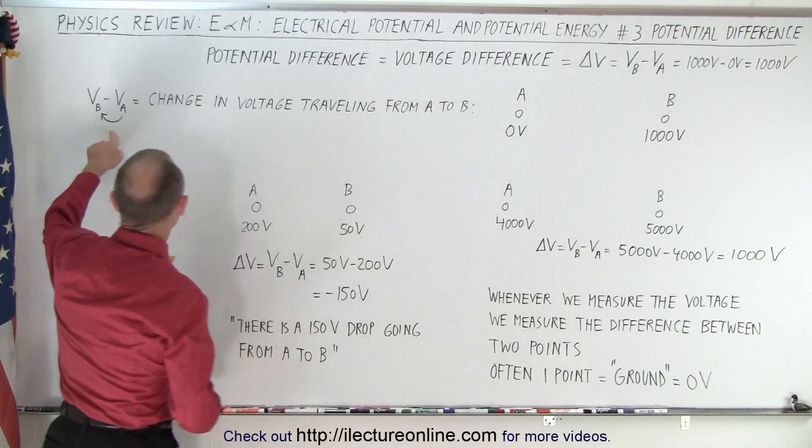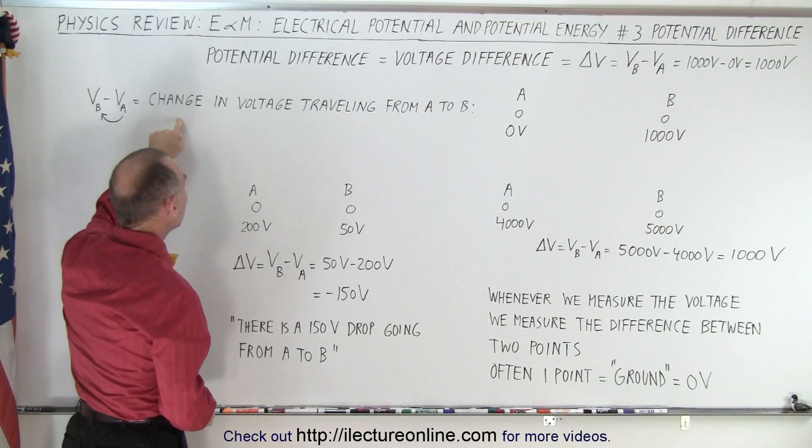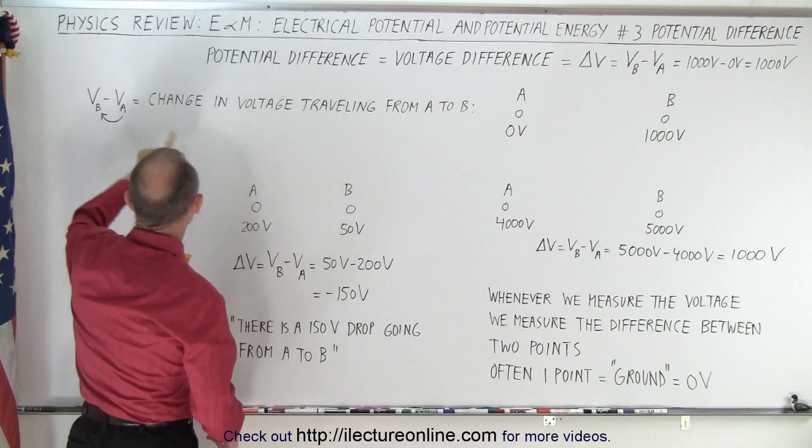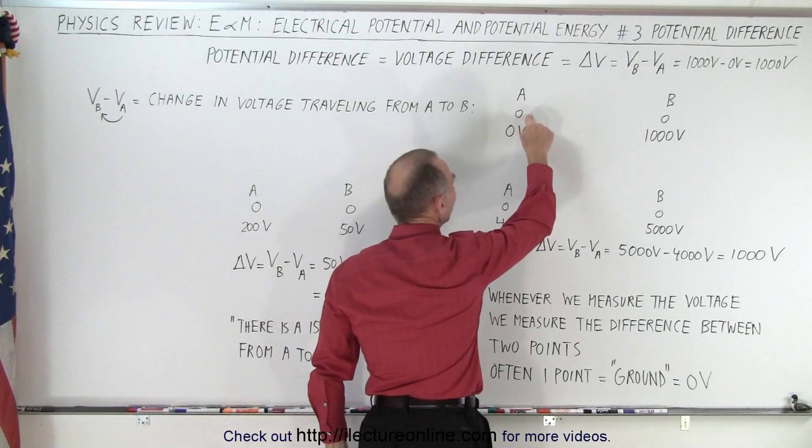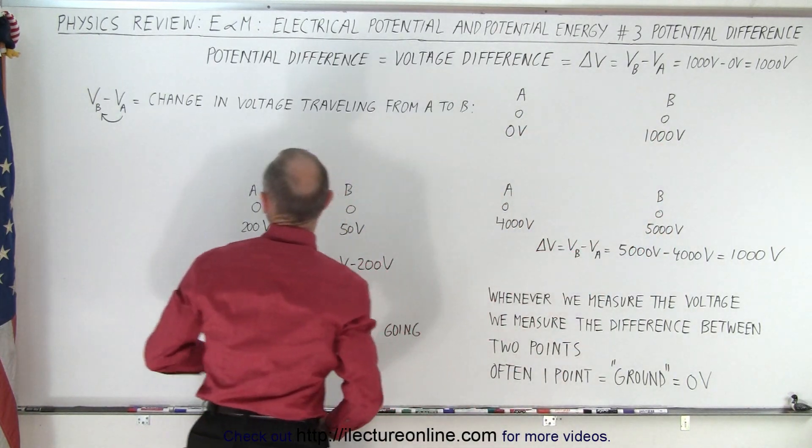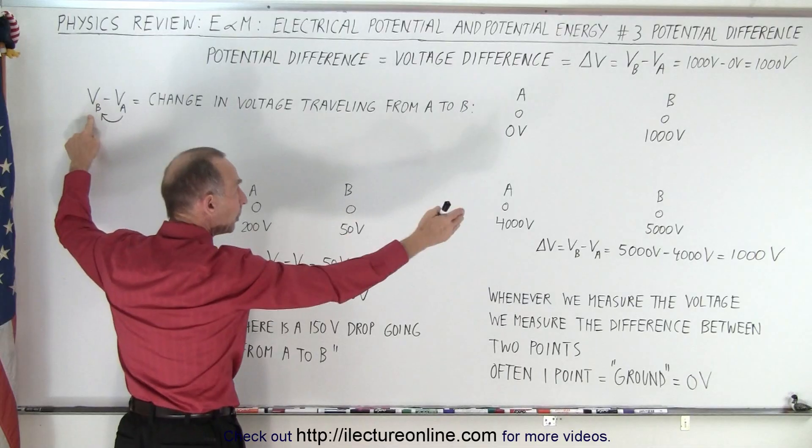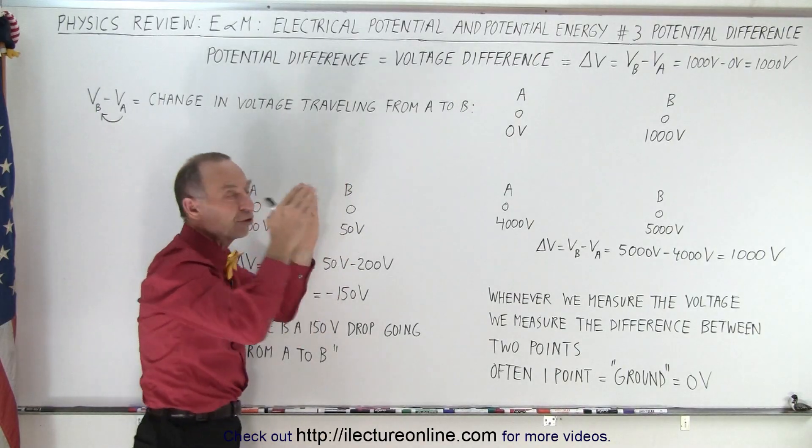Well when we write it like this, VB minus VA, that means we have the change in voltage traveling from A to B. So here we're at A at zero volts and then we travel to B which is a thousand volts, and so what we do is we take the voltage where we end up and subtract the voltage where we came from, and that's then the voltage difference.